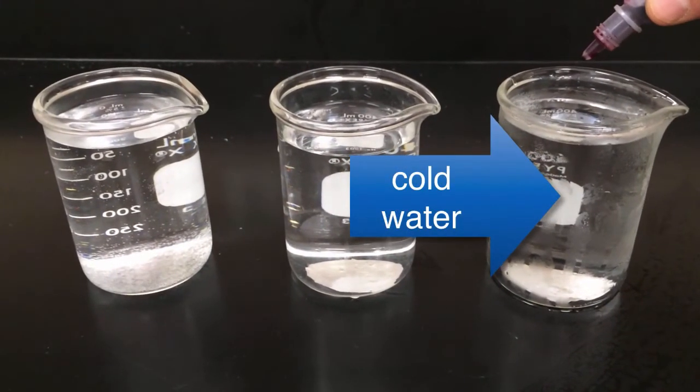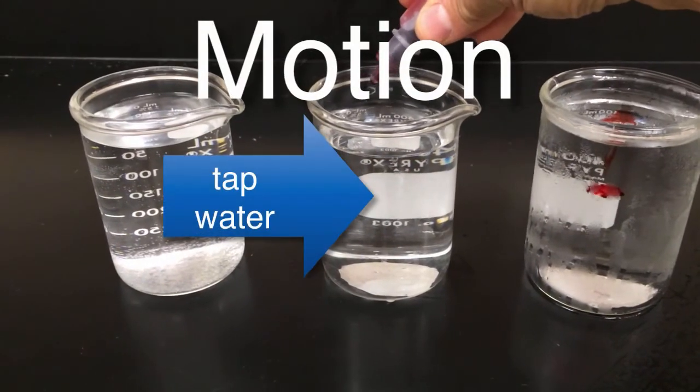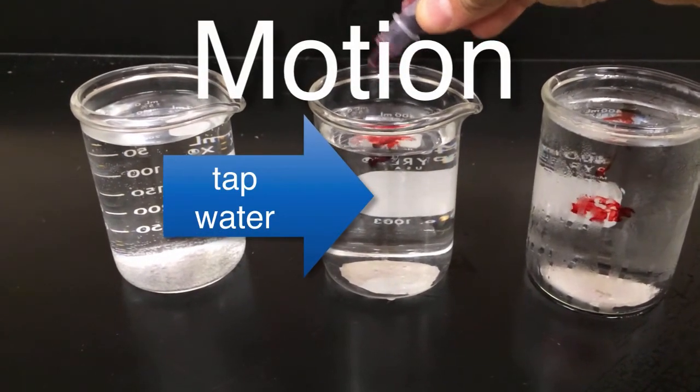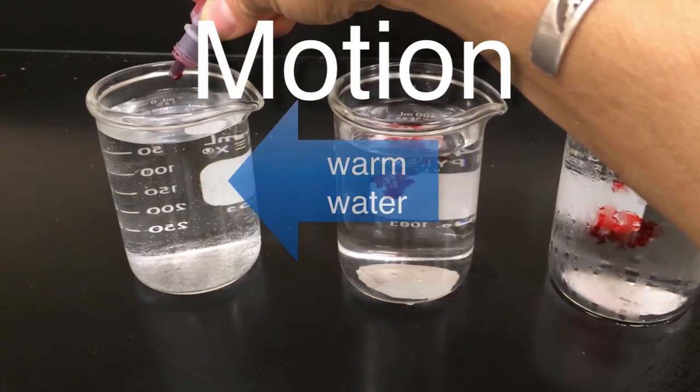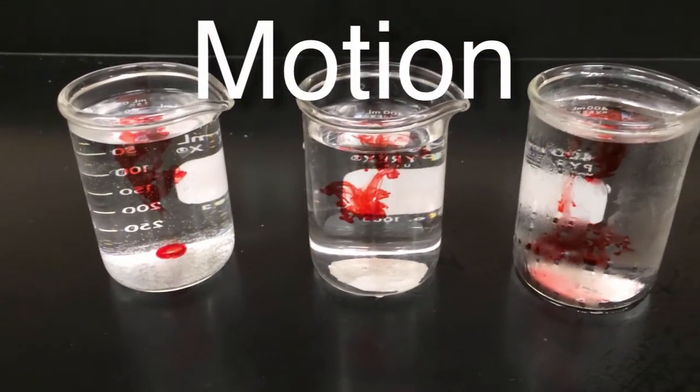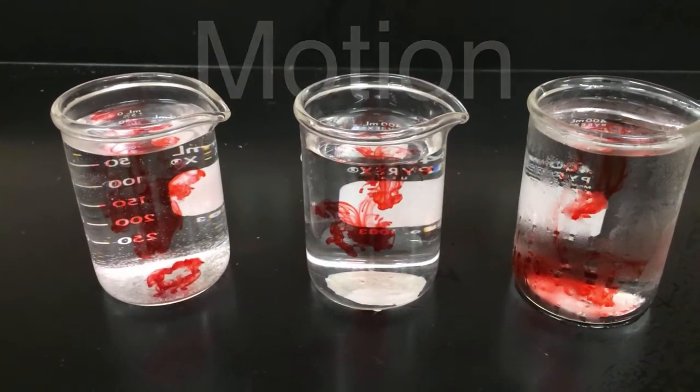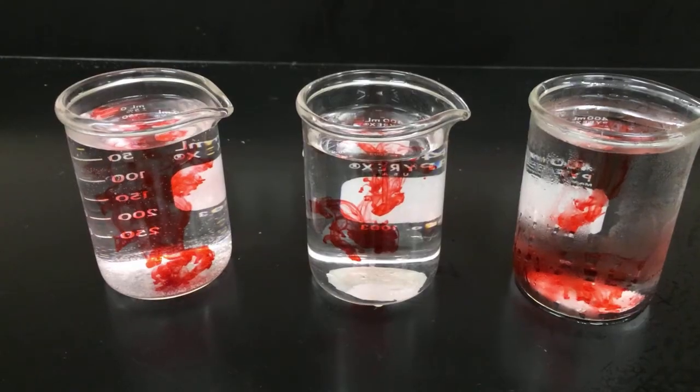The last idea is motion. So we're putting a drop of food coloring into cold water, room temperature tap water, and finally some warm water. And you can see that they don't move all the same. And the dye helps you see the motion of the particles. All particles are in motion. It's just a matter of how much motion they have.